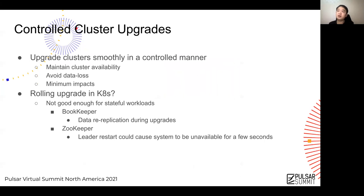The first example is cluster upgrades. We would like to upgrade clusters smoothly in a controlled manner to maintain cluster availability, avoid data loss, and reduce impacts to cluster users during upgrades. StatefulSets in Kubernetes support rolling upgrades by restarting pods in ordinal sequence, one after another. However, it's not good enough. For the upgrade of the ZooKeeper cluster, there may be multiple leader restarts during the upgrade, and each leader restart may cause unavailability for a few seconds. The upgrade workflows are optimized in operators for both kinds of clusters.